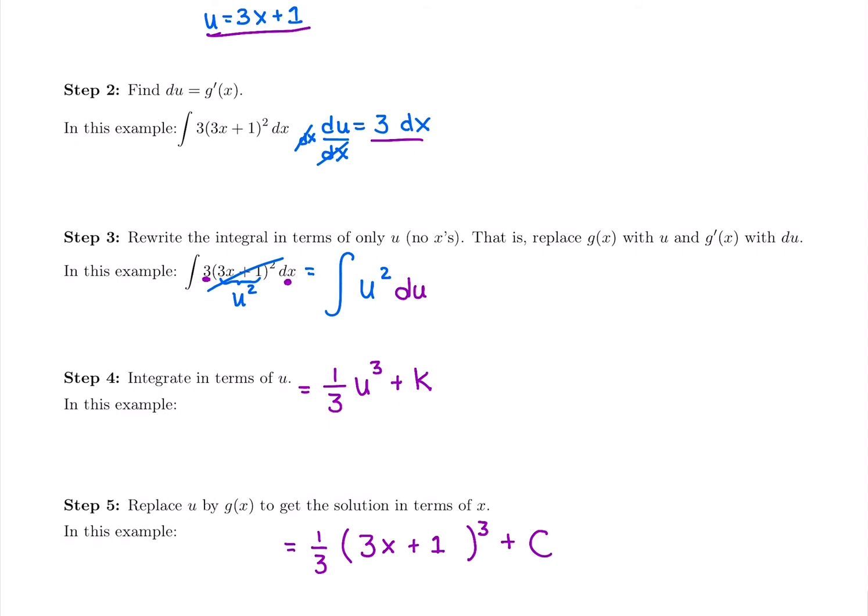Now we could check our answer just like we could have with any antiderivative. We would normally stop there, that's perfect, that's the answer, we are done. But if you're not feeling confident, you can check it by taking the derivative of what you just found. You should get back to exactly what was in the integrand.